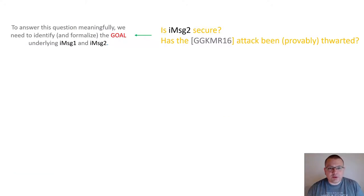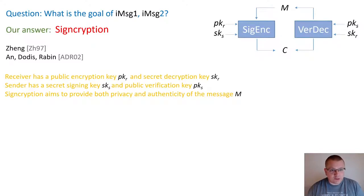To answer the question about the security of iMessage, we need to start by identifying the security goal targeted by the iMessage design. Our answer is that the goal is signcryption. Signcryption was introduced by Zheng in 1997, and its security was formalized by An, Dodis, and Rabin in 2002. Signcryption combines encryption with signatures to build a single primitive that simultaneously provides both privacy and authenticity of the signcrypted messages.